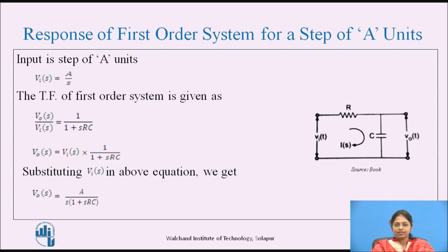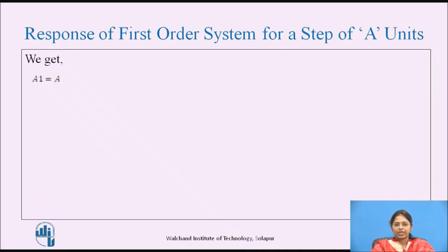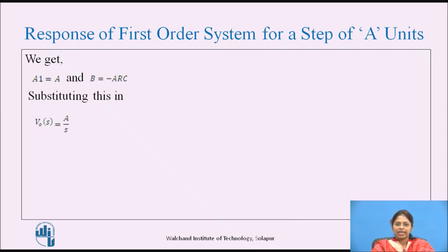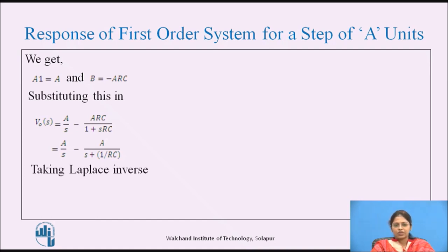Using the partial fraction method, this is rewritten as a1/s + b/(1 + s·RC). Solving the fractions, we get a1 = a and b = −a·RC. Substituting the values of a1 and b, we get V_O(s) = a/s − a·RC/(1 + s·RC). Taking RC to the denominator, this becomes a/s − a/(s + 1/RC). Taking the Laplace inverse, the output response in the time domain is V_O(t) = a·(1 − e^(−t/RC)).